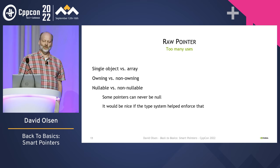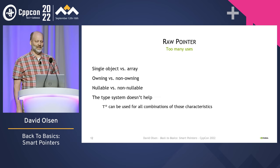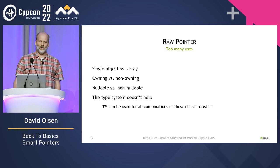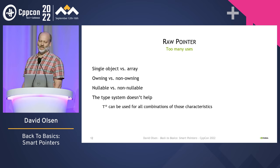In some parts of your code you might know that a pointer should never be null — your code would be simpler by removing all the null pointer checks if your pointer type simply didn't allow null pointer values. But C++ pointers don't have that capability. The C++ pointer type T* can be used for all possible combinations of these characteristics. You can't use the type system to communicate your intentions about how the pointer is used or should be used — this leads to code that is unclear, difficult to understand, and error prone.